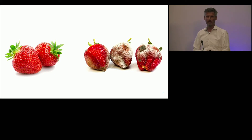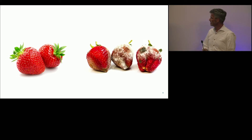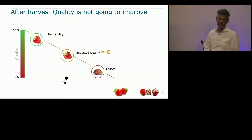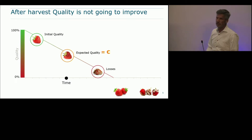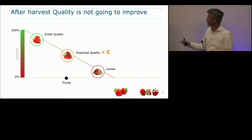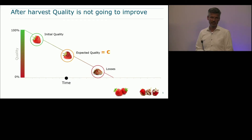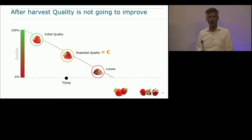We are all consumers and experts — we know it won't stay in this shape for long. For strawberries kept out of the fridge, it takes maybe three or four days, and then you end up with what you see on the right-hand side: a product you probably do not want to eat. This is the challenge we face every day when buying fresh fruits or vegetables — a challenge for the consumer but also for the supply chain.